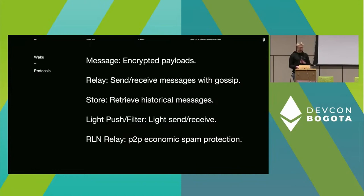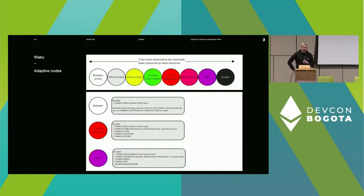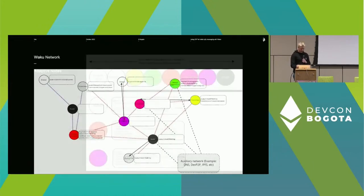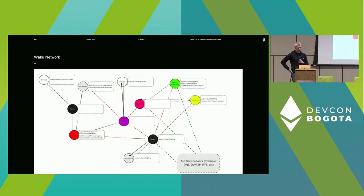There's also RLN relay, which is used for peer-to-peer economic spam protection using ZK-SNARKs, which I'll go into shortly. One way of looking at Waku is as an open service network where there are nodes with varying degrees of capabilities and requirements — for example, bandwidth usage, storage, uptime, privacy requirements, latency requirements, and connectivity restrictions. We have the concept of adaptive nodes that run a variety of protocols. Node operators can choose which protocols they want to run, and naturally some nodes do more consumption and others do more provisioning, giving rise to the idea of a service network.